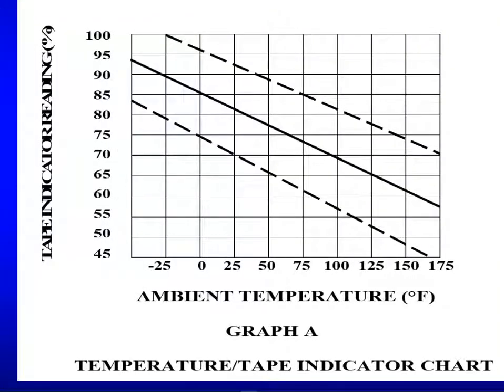This is going to show your tape indicator reading in percentage. When we look at that tape reader on the side for how much pressure that we should have on that same 50 degree Fahrenheit day, the minimum reading should be at 66%. The tape reading should be at 66%. That's just the minimum though. Your optimum reading is going to show that you should have 78% at 50 degrees Fahrenheit.